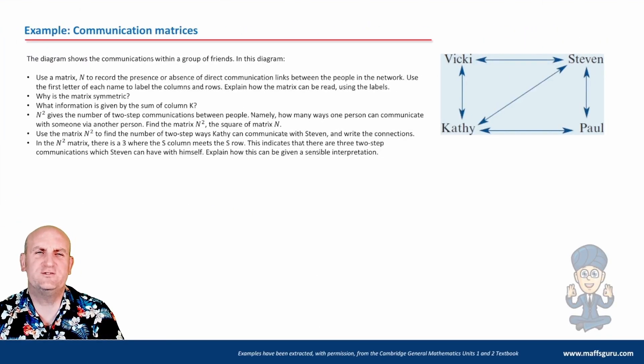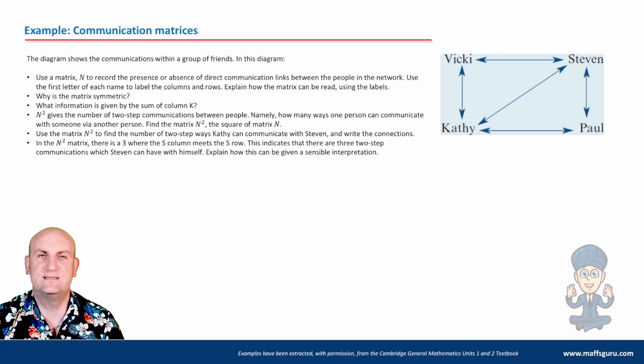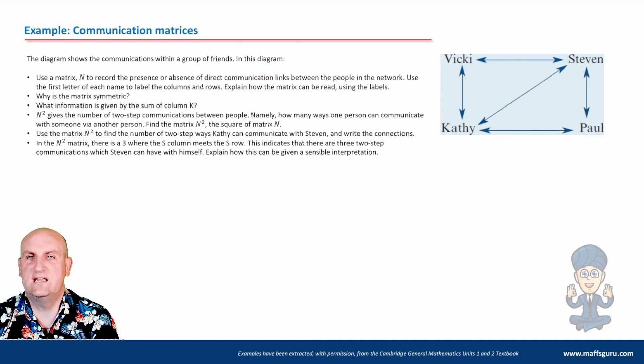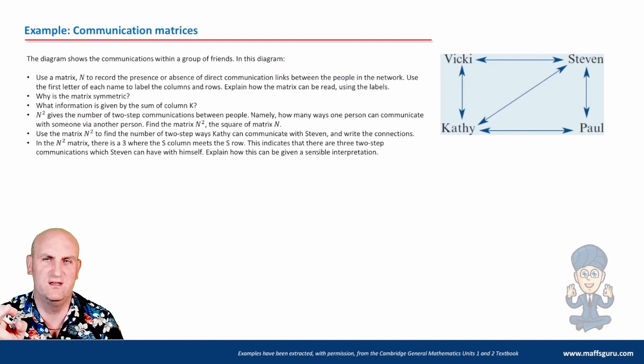In the N squared matrix, there is a three where S meets S. This indicates that there are three two-step communications which Stephen can have with himself. Explain how this can be given a sensible interpretation. Basically, it just means Stephen can talk to Vicky and back to himself. Stephen can send a note to himself via Kathy, and Stephen can send a note to himself via Paul. Random, but there you go.